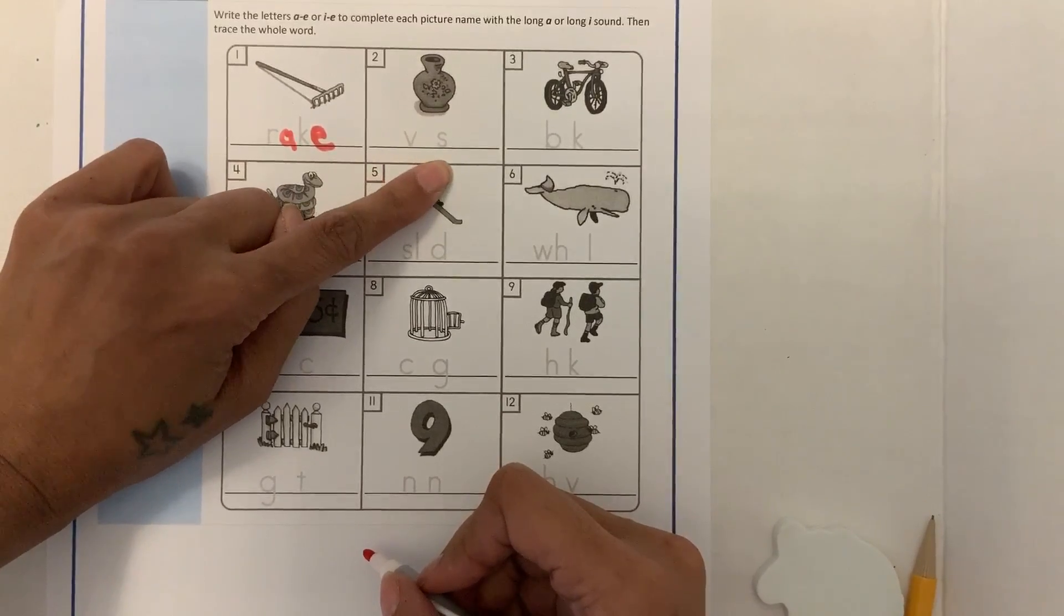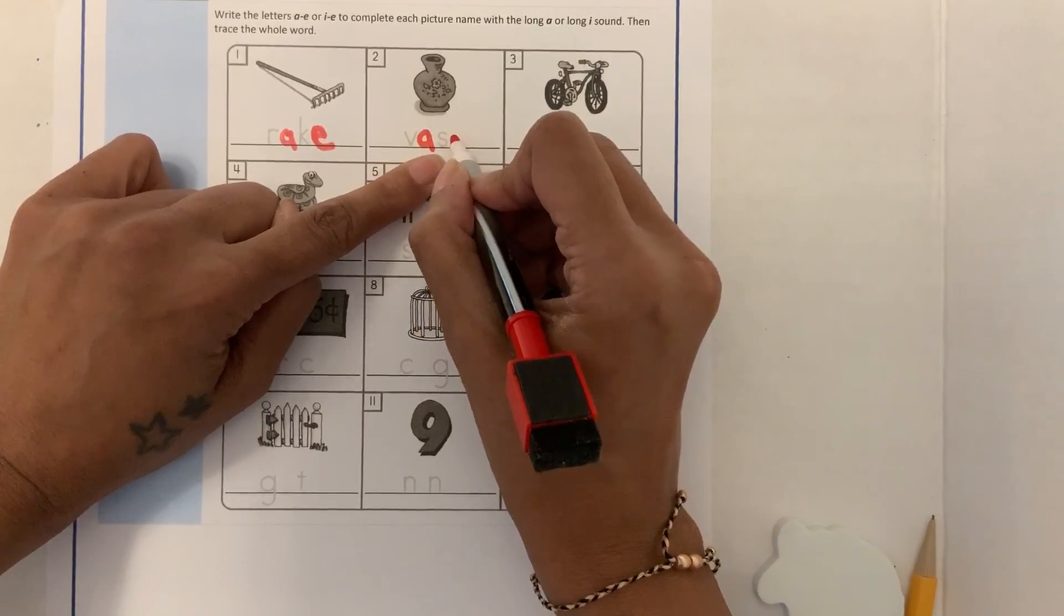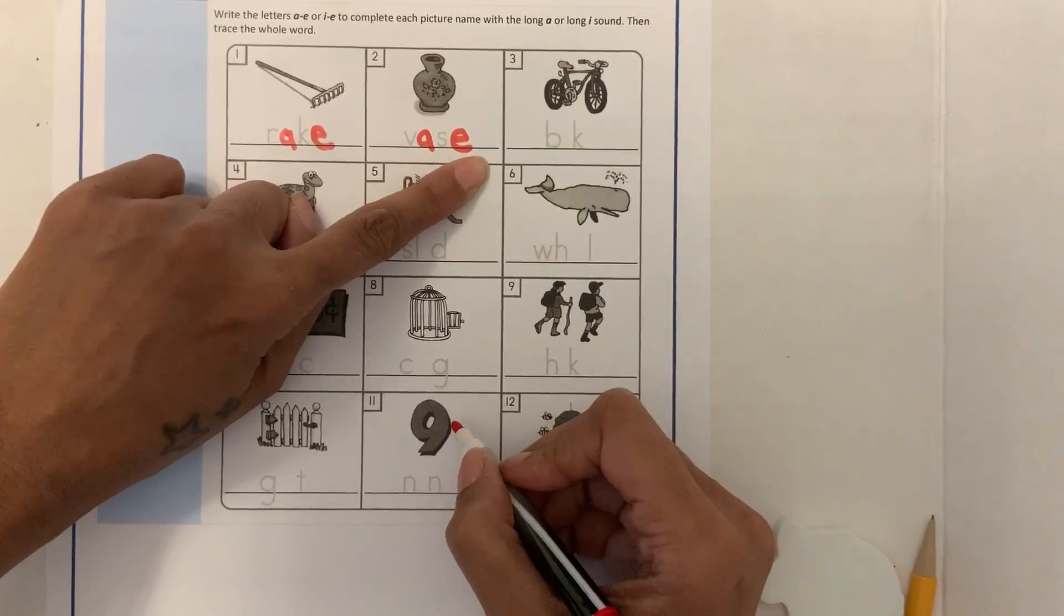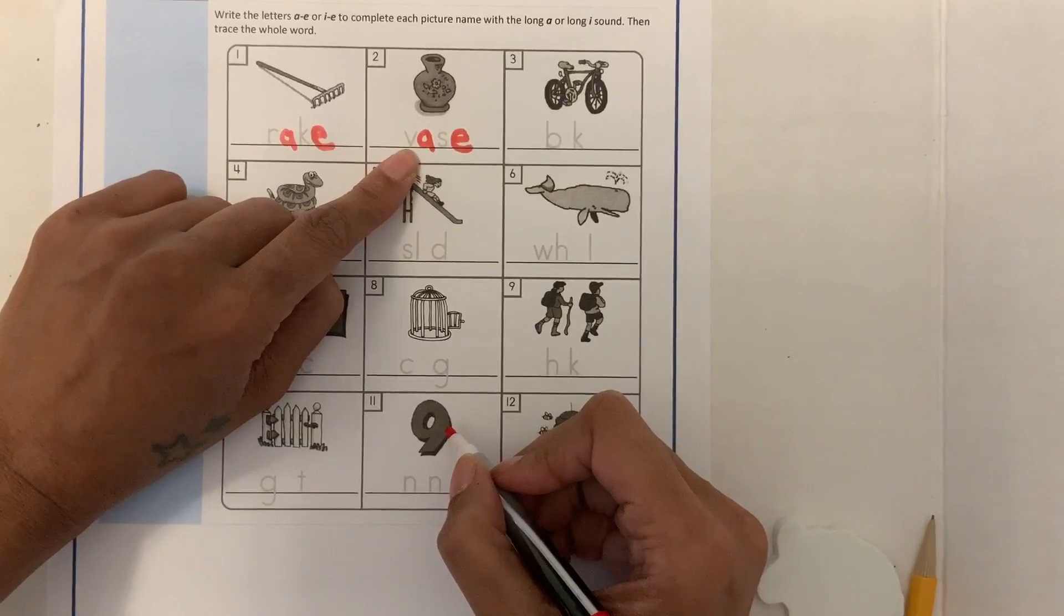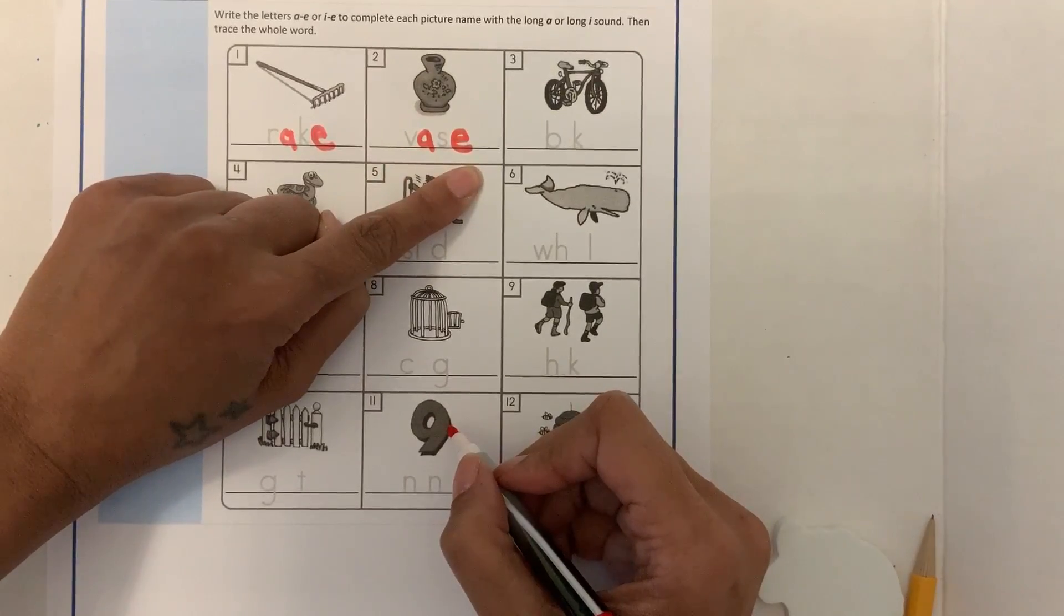Vase. Again we're going to put our A and we're going to put our silent E. We're not going to say the sound for the E. So when we sound it out it's vase.